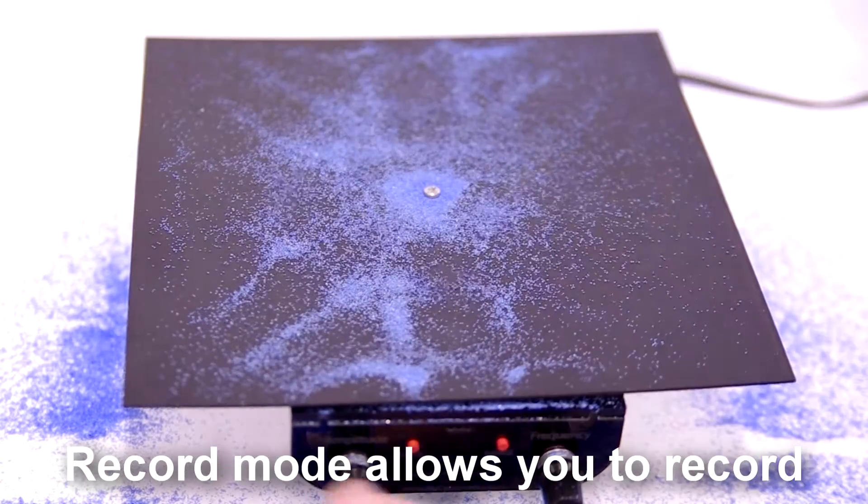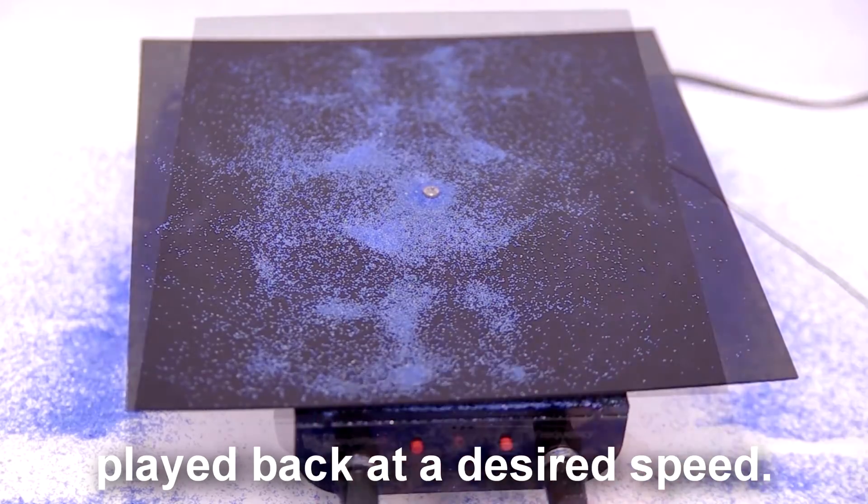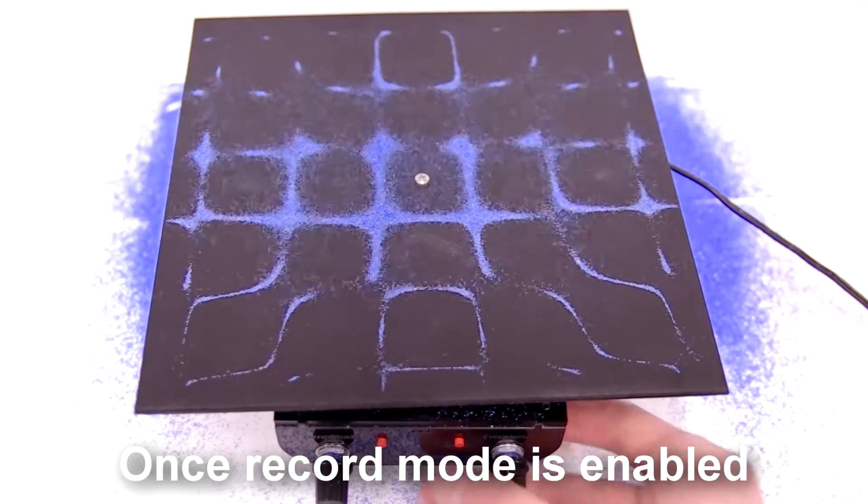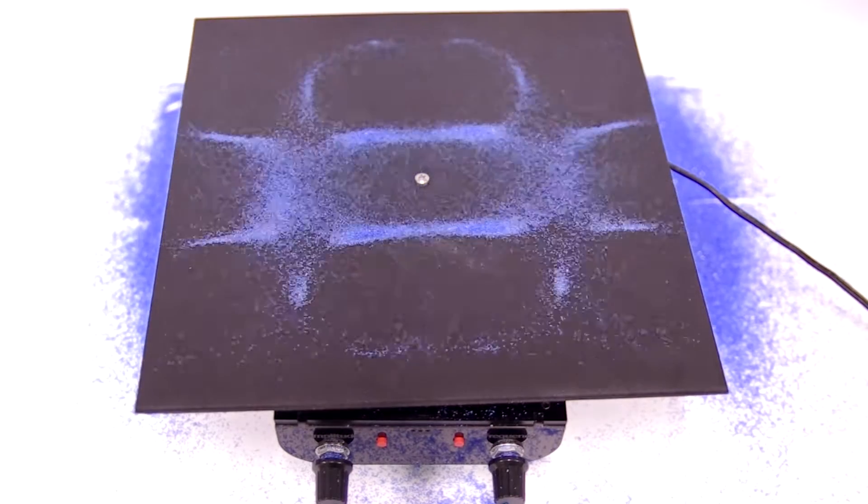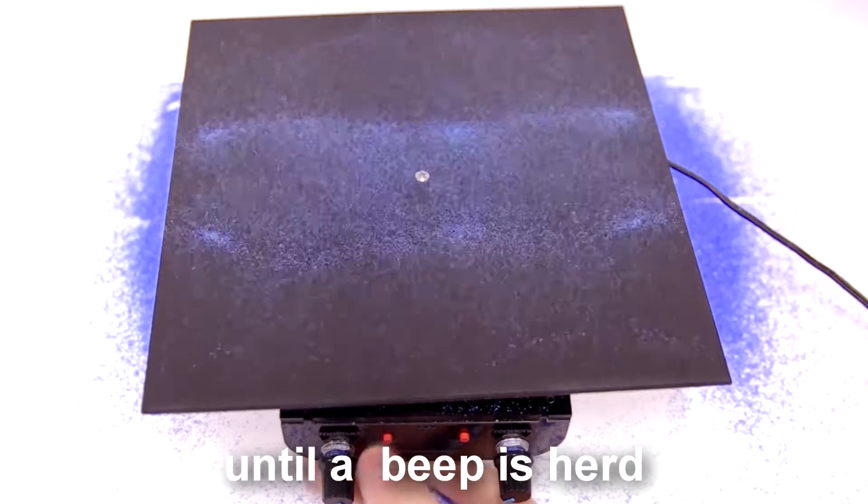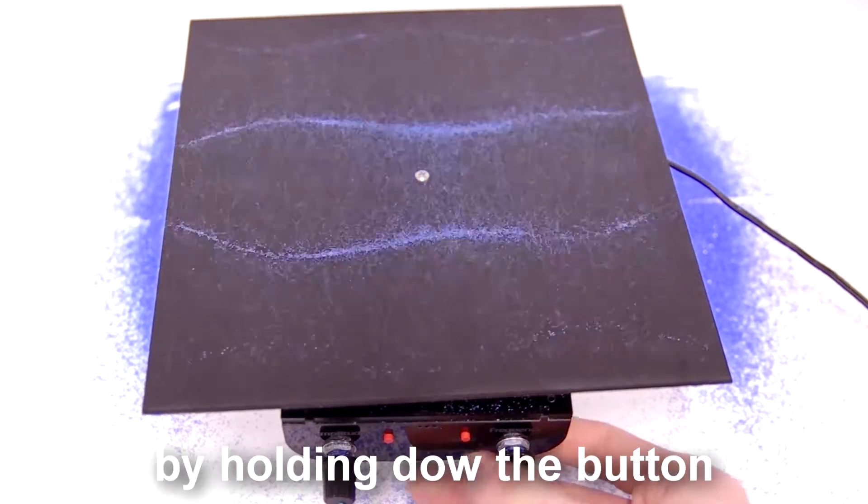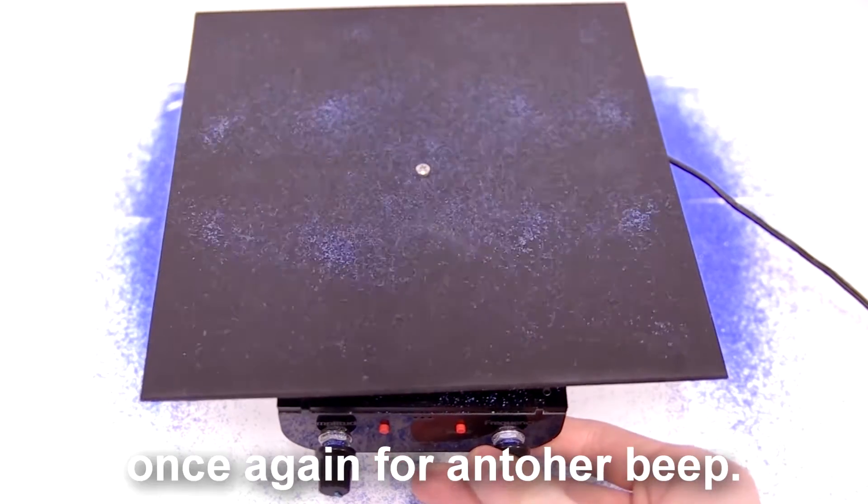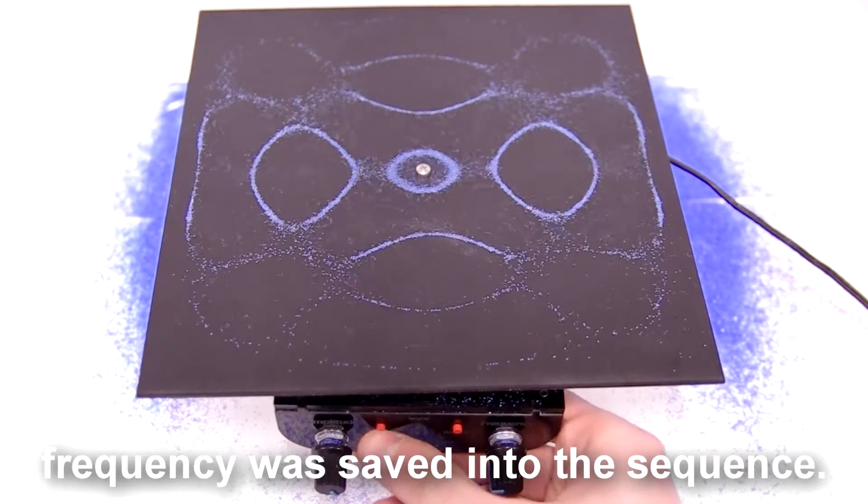Record mode allows you to record a set of frequencies to be played back at a desired speed. Once record mode is enabled the current saved tune will play. The left button should then be held until a beep is heard which will change to sine mode, allowing the frequencies to be saved by holding down the button once again for another beep. The second beep means the frequency was saved into the sequence.